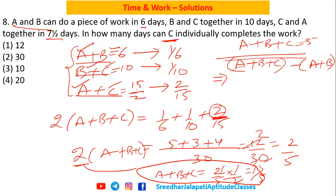So what is ABC one day work? As they take five days, their one day work is 1/5. From that, subtract AB together one day work, which is already given in the question, 1/6. So if I simplify, LCM is 30, this is 6 minus 5, which is 1/30. That means C alone takes 30 days.